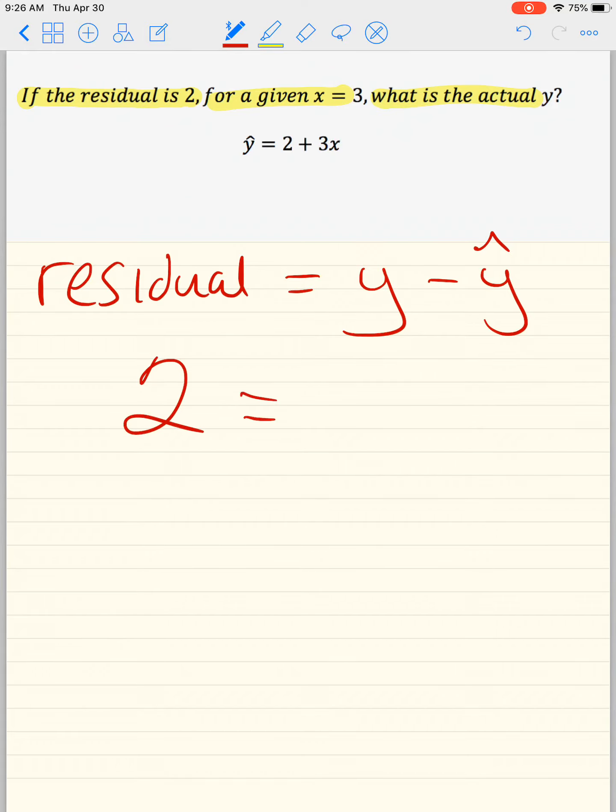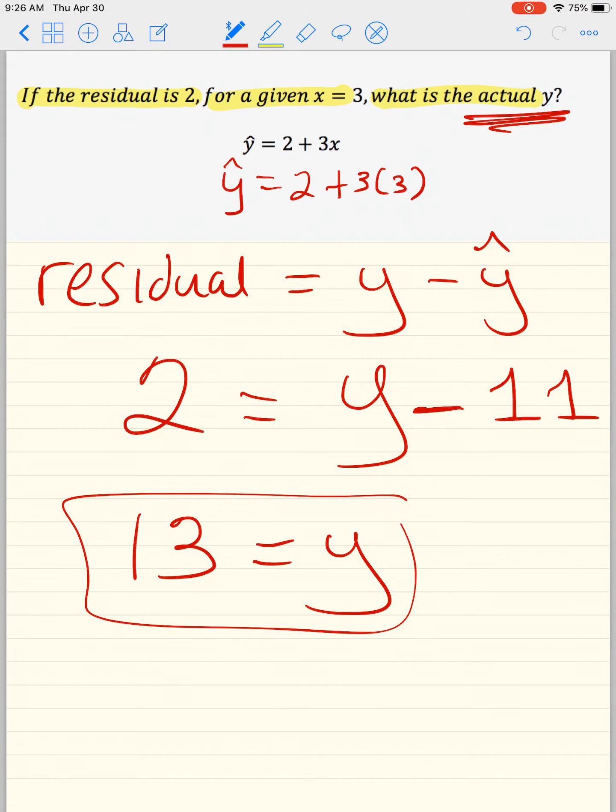The residual is 2, y is what I'm looking for, that's my actual y minus, now be careful with that minus, just put it down there. And then we got here y hat equals 2 plus 3 times 3, and that's 11. If I add 11 to the other side, I get y to be 13. So the key is to always write down the formula. Only one thing can be unknown. If you're looking for the actual y, then residual and y hat need to be known.